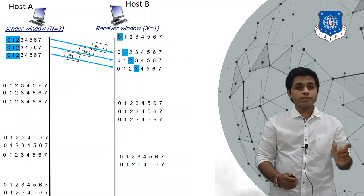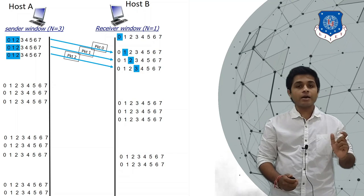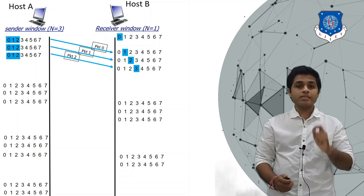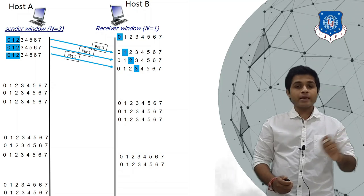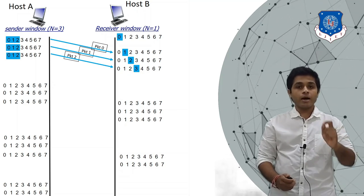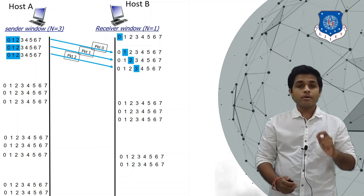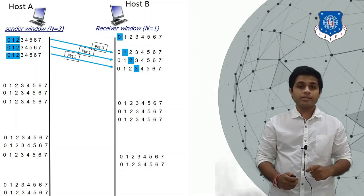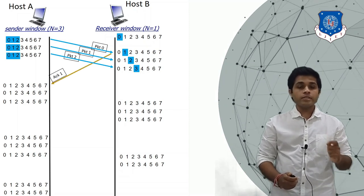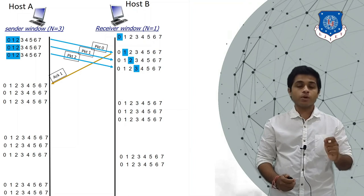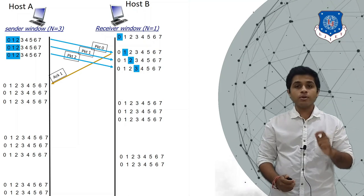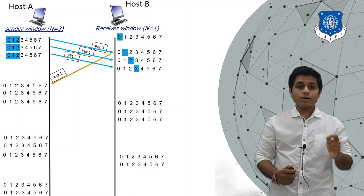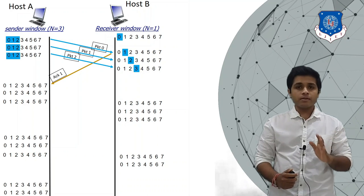The current position of the sender's window tells you how many packets are in transmission, and the current position of the receiver's window tells you what packet the receiver is expecting next. Packets zero, one, and two are in transmission, and receiver B is expecting packet three next. When B receives packet zero, it sends acknowledgement one — always remember the acknowledgement number is the sequence number of the packet plus one.